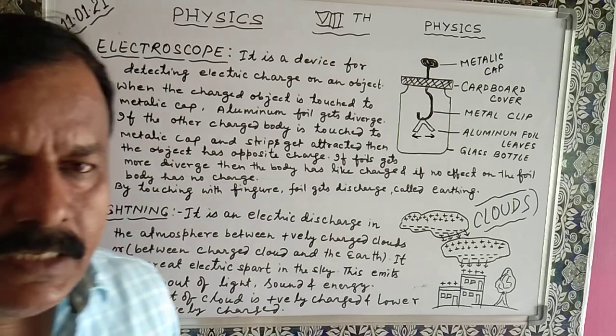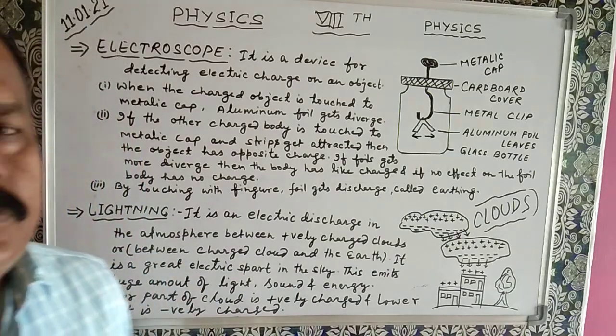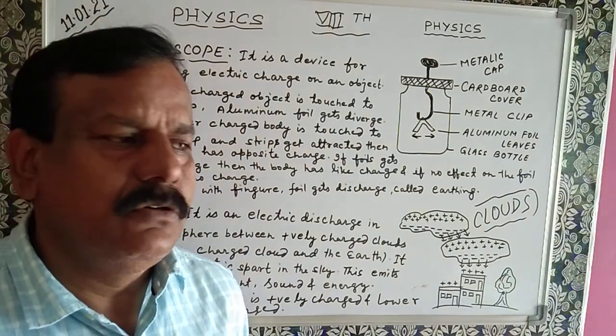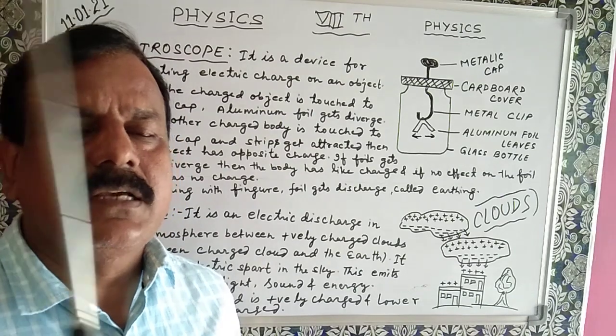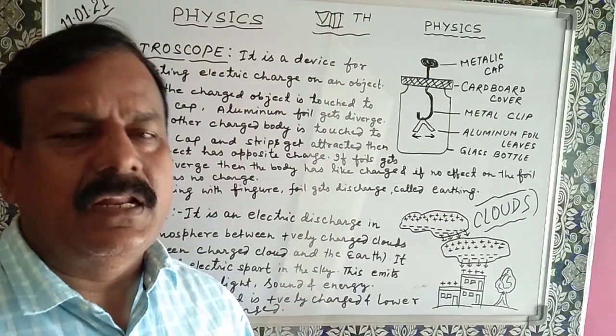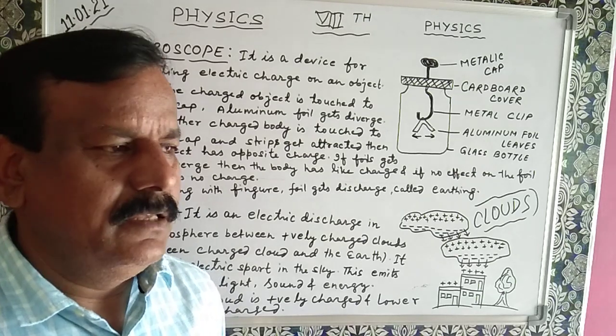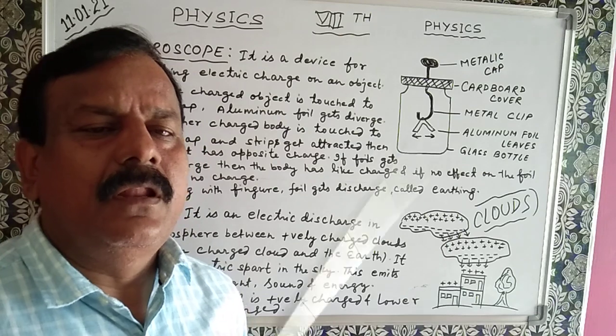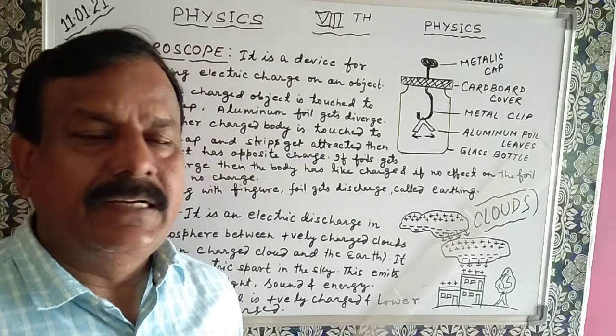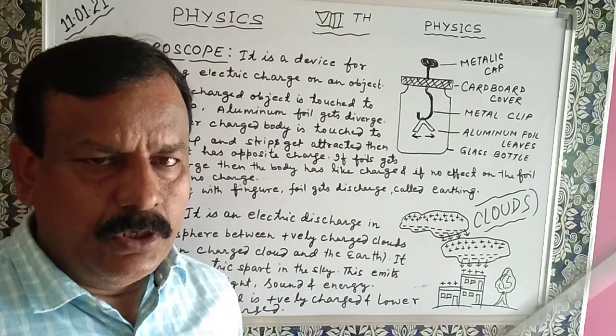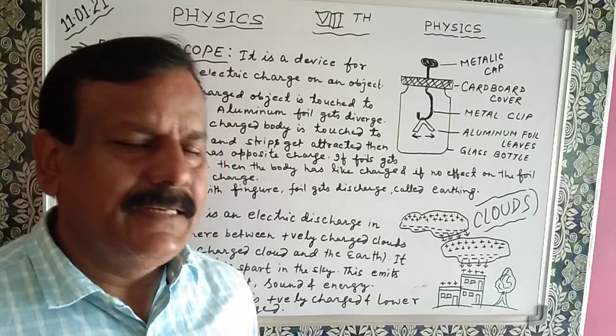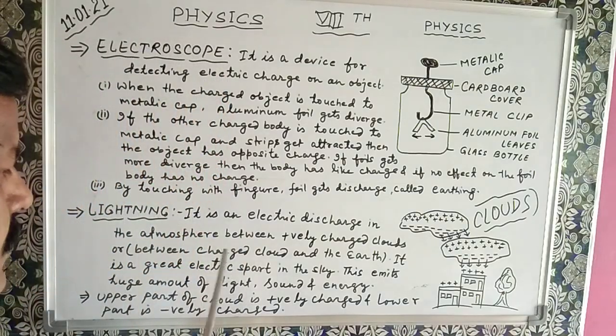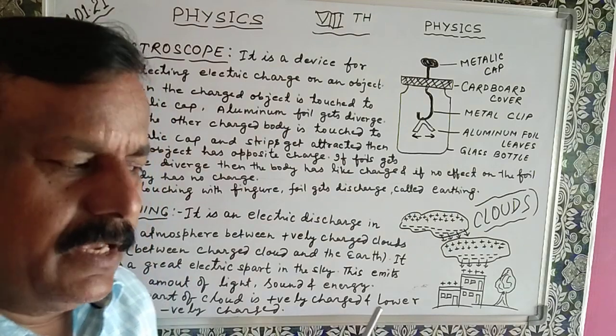So this device - now come to the lightning. We all know we have seen lightning during rainy days in the sky. A big flash of light appears in the sky and afterwards a very loud sound - that is called thundering. It happens due to lightning in the sky.